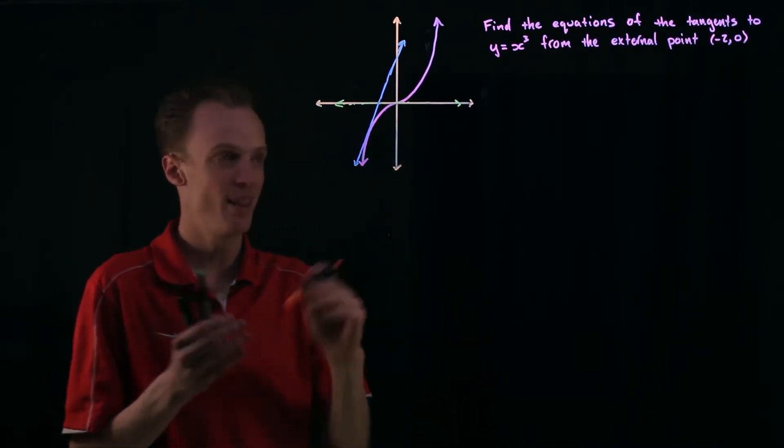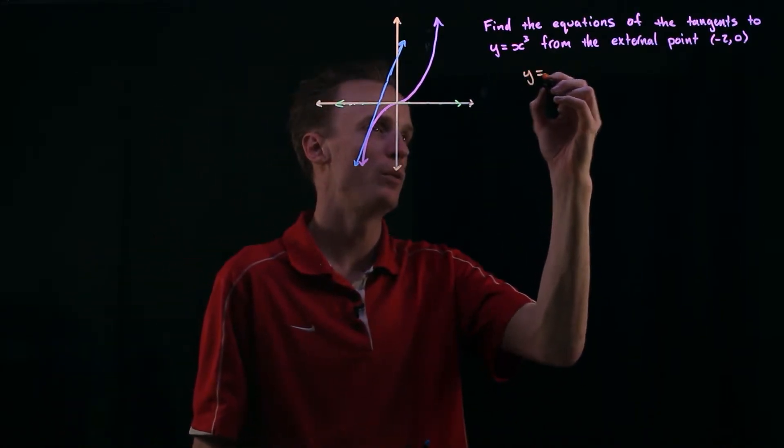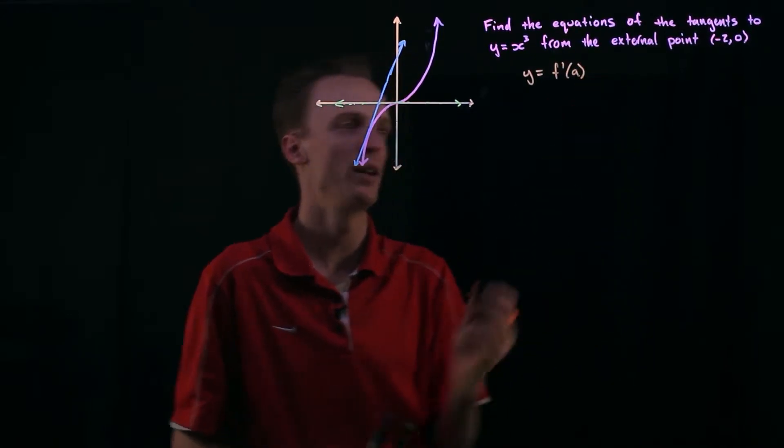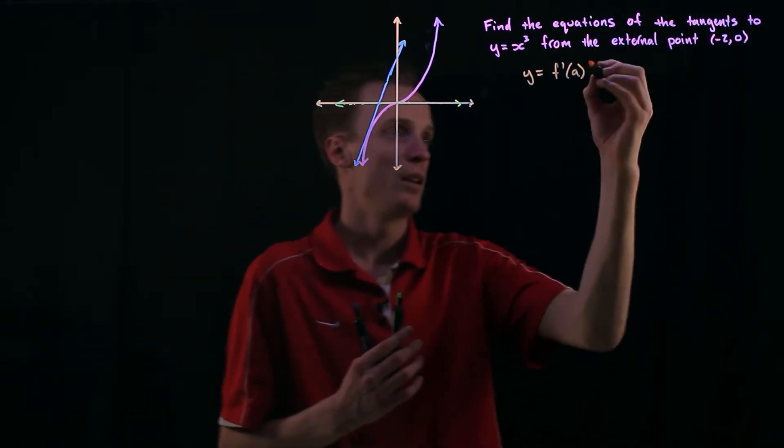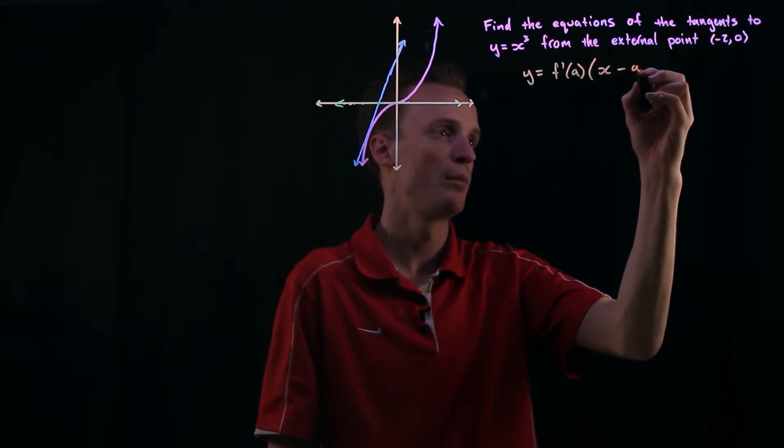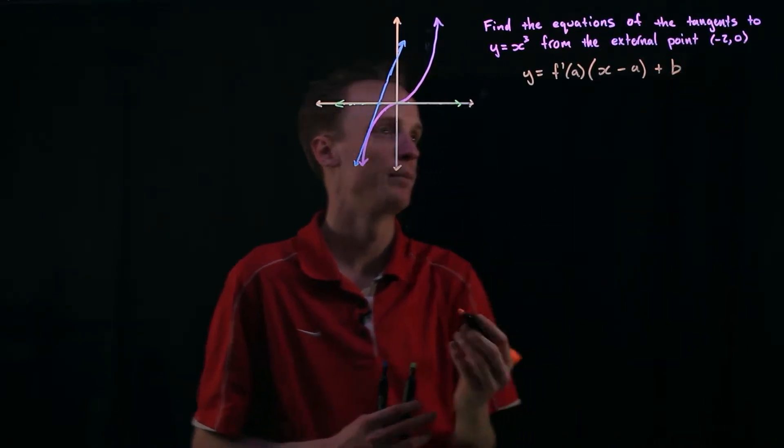So that's a formula that we learned previously where it was y equals the f dash or the gradient at the point of a is going to be multiplied by x minus my a point and then added on with my b point just in here.